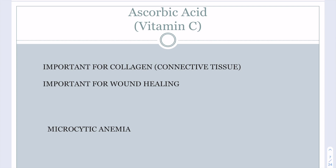Next up is ascorbic acid, or vitamin C. The famous disease is scurvy, where sailors on ships had really bad teeth because they lacked citrus fruits. Vitamin C is important for collagen hydroxylation and therefore the integrity of connective tissue. Without vitamin C, connective tissue breaks down, loosening the bone supporting the teeth, which then fall out. Vitamin C is also important for wound healing — a deficiency leads to increased wound healing time.